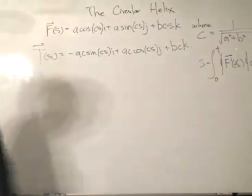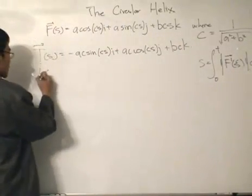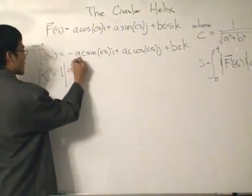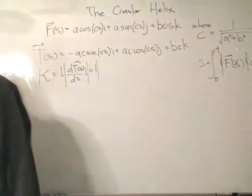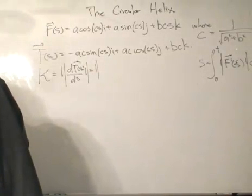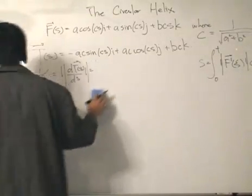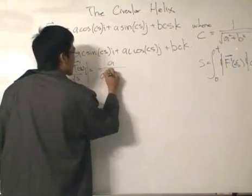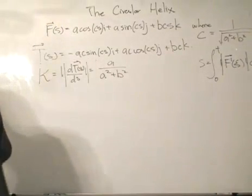Our objective is to find κ (curvature) and torsion, and later find the vectors of the Frenet frame. Kappa is the magnitude of the first derivative of the unit tangent vector with respect to s. The result is: κ = a / (a² + b²).